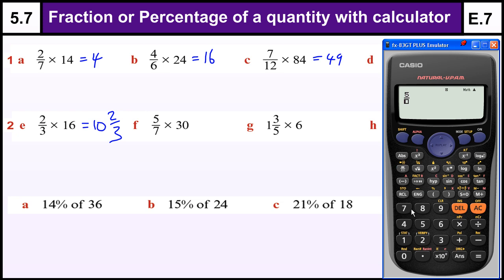Next one, 5 over 7, times by 30. Gives me 21 and 3 sevenths.